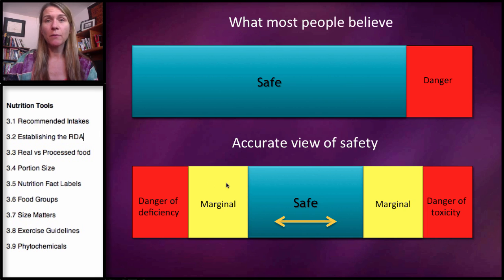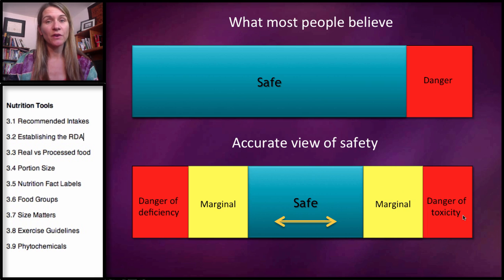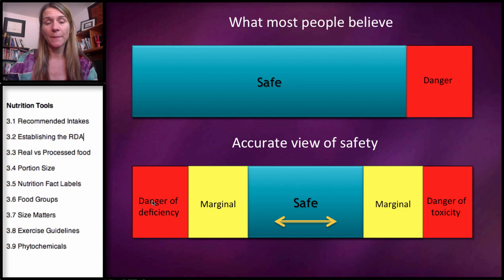Out here, this is marginal and it really depends from person to person — it depends on the individual. And then there's a danger of toxicity with too much of one nutrient and a danger of deficiency with too little of another nutrient. The question is, how are these guidelines established?